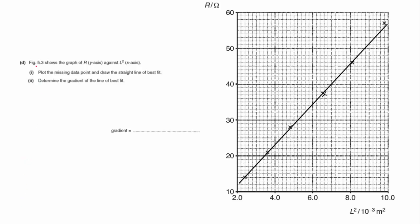Part D. Figure 5.3 shows the graph of R along the y-axis against L-squared on the x-axis. We've got to plot the missing data point and draw the straight line of best fit, which I've done. So there's my missing data points, and I've got a line of best fit in. With the line of best fit, I should have an equal scatter either side, so that one's on, that one's on, slightly above, slightly below, marginally below, and a little bit above. So I would say I'd be quite happy for that.